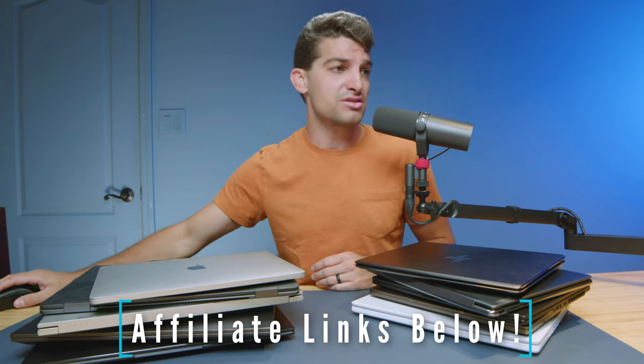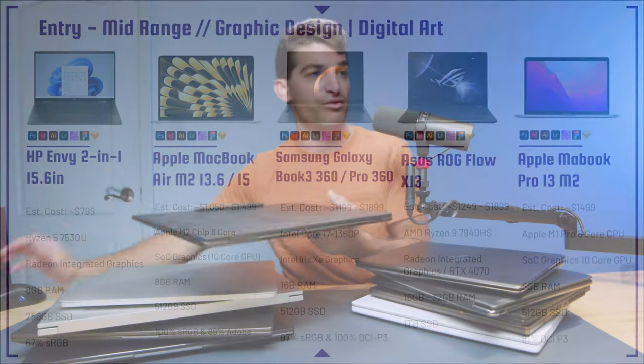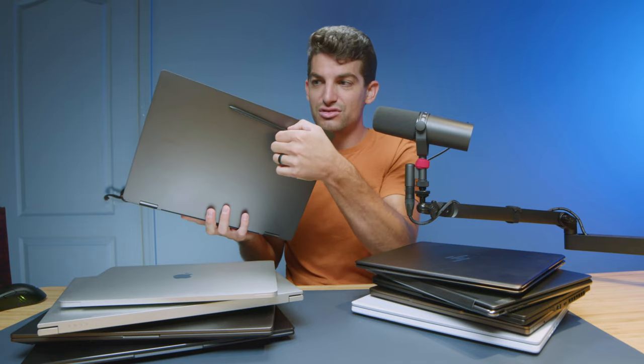Next up on the lineup is going to be the Samsung Galaxy Book 3 Pro 360 and just the regular 360. Here's a little hack: the Pro 360 and the 360 have the exact same CPU. So if you want to save a little money, just get the 360 — you can save like $600 to $700 by going with the 360. I have the Pro 360 here before me — it's a fantastic laptop. It's a 16-inch model with a pen that magnetizes to the top of the screen and a massive trackpad.